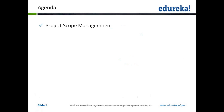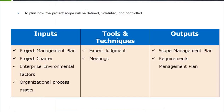We will be looking at project scope management, and the first step is to plan the scope. For planning the scope, the inputs are the project management plan, the charter, the EEF and OPS. The tools and techniques are expert judgment and meetings. The outputs are the scope management plan and the requirements management plan.